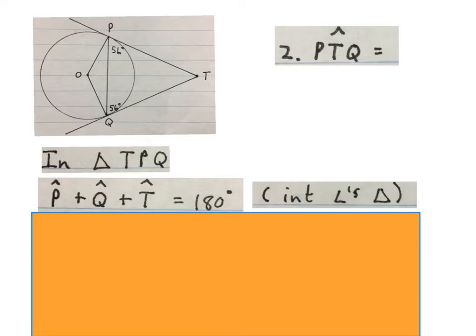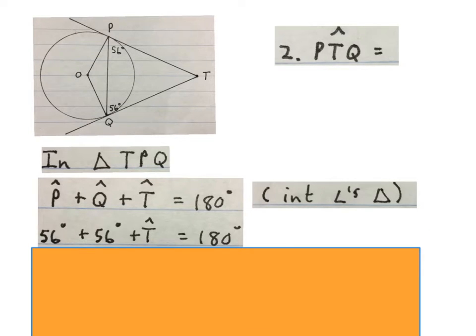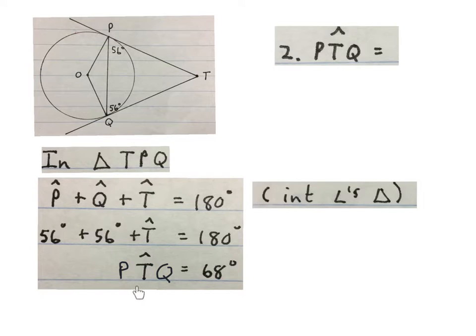Angle P plus angle Q plus angle T equals 180, interior angles of a triangle. Then I fill in the sizes that I have, and those I don't, I leave. So we have 56 plus 56 plus T equals 180. Then I minus these two 56's from the 180. Then we see PTQ equals 68 degrees. And I write it in on my sketch.